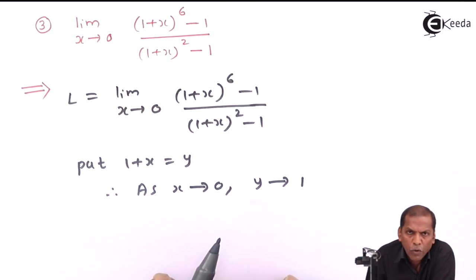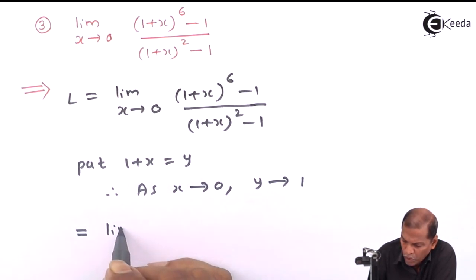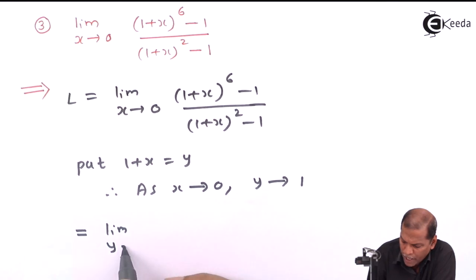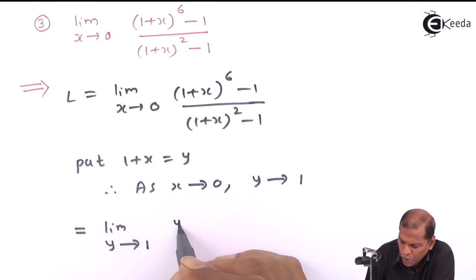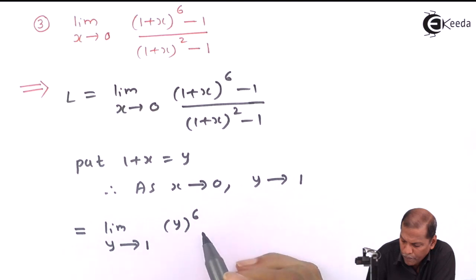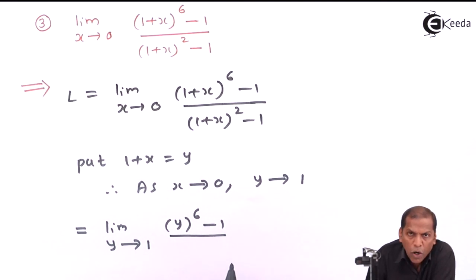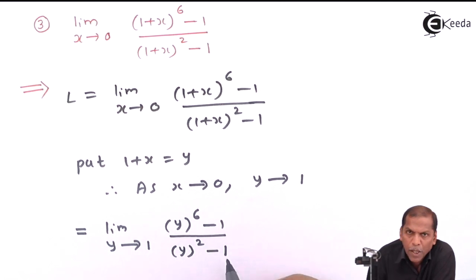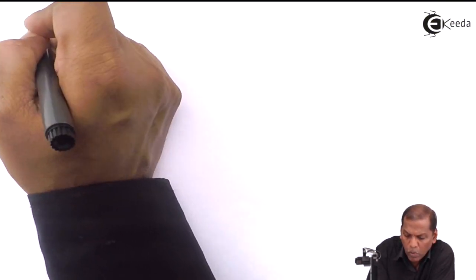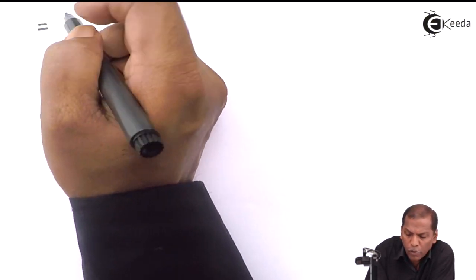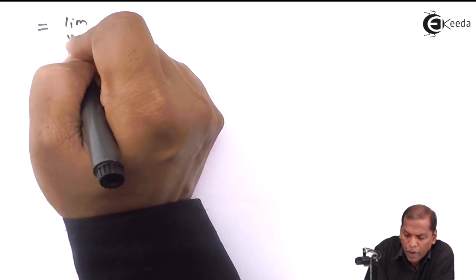Therefore, the next step will be limit as y tends to 1 of y^6 - 1 over y^2 - 1. That equals limit as y tends to 1...